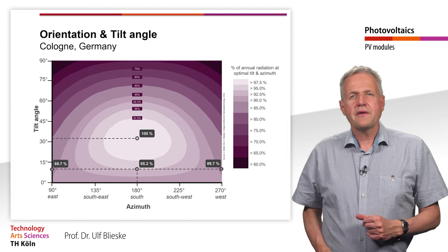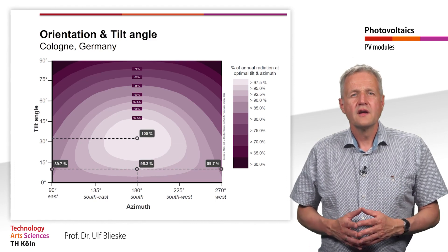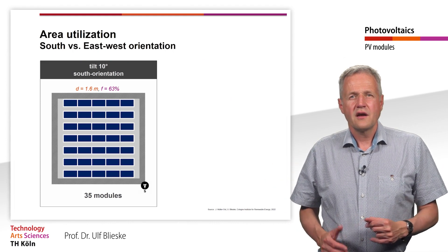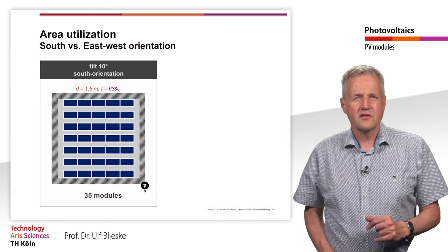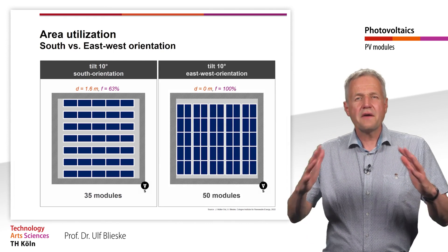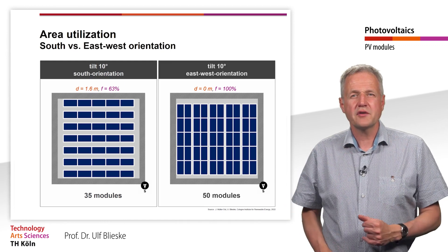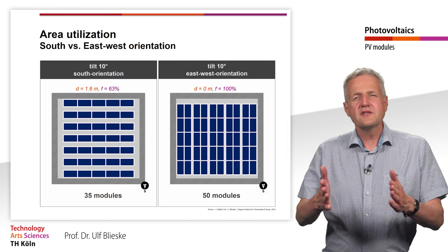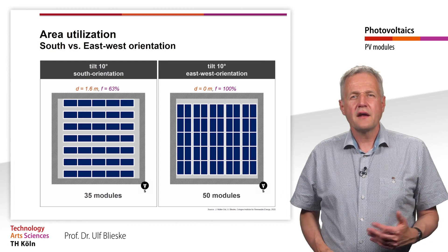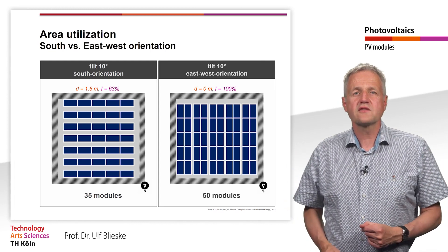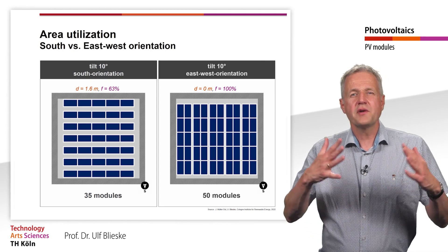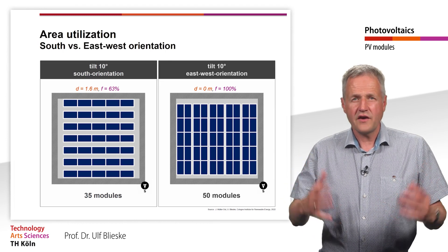Let's take a look at the area utilization of the roof. With south orientation, the area utilization ratio in Cologne is 63%, and on our example roof we can install 35 modules. With east-west orientation, no distance between the module rows is needed, so the area utilization ratio theoretically increases to 100%. In practice, of course, we still need a small distance for maintenance work. On our example roof, we can now mount a total of 50 modules in east-west orientation. The energy yield per square meter of available roof surface can therefore be significantly increased by an east-west orientation.